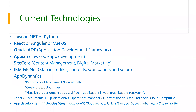A little about current technologies: Java, .NET, or Python are the programming languages being used in 2022. In the next five to ten years, people will definitely use them — after that, we don't know. React, Angular, or Vue.js are the front-end technologies being used currently.